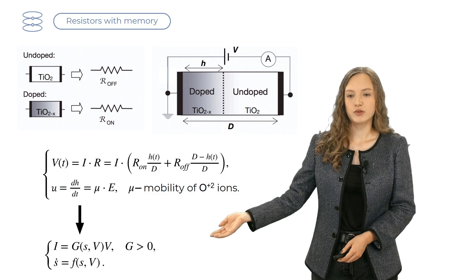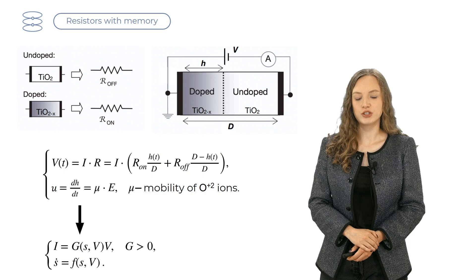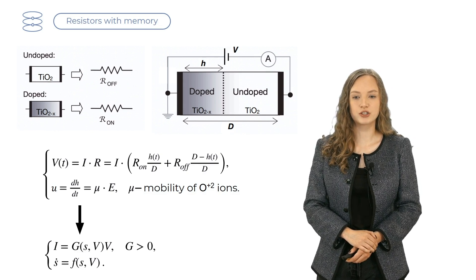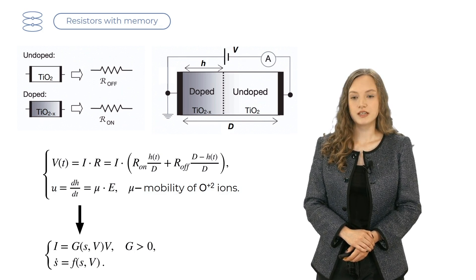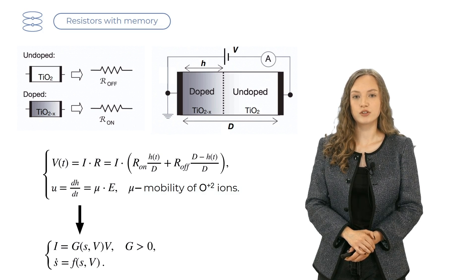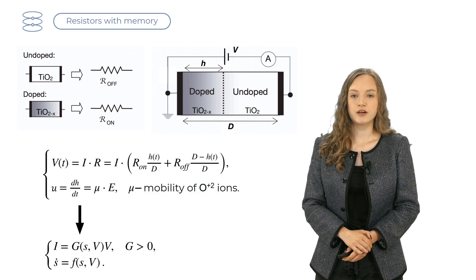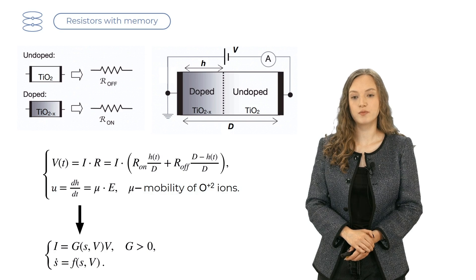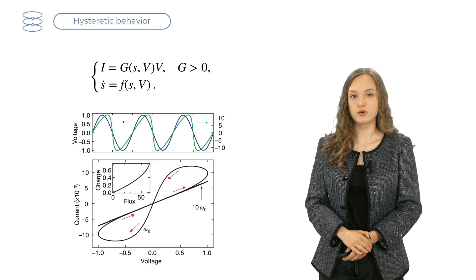We can rewrite this set of equations in a more general way. So, for Ohm's law, we replace resistance with conductance G, which is the inverse of resistance, and G now is the function of voltage V and some state parameter S. The second equation is for the state parameter. So, the first derivative of S by time equals some function F, a function of the state parameter and voltage.